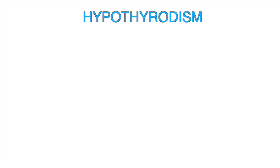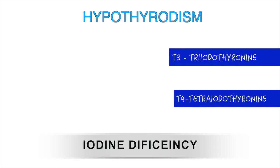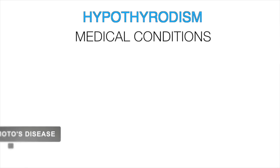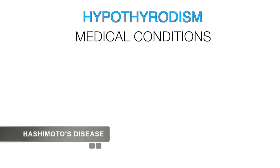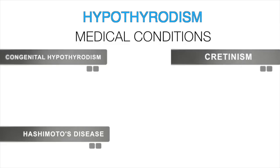Hypothyroidism is the less production of thyroid hormone. The main reason behind it is iodine deficiency, since iodine is a source for both T3 and T4 hormones. Iodine deficiency causes hypothyroidism, which in turn leads to several medical conditions including Hashimoto's disease — an autoimmune disorder causing gradual destruction of the thyroid gland due to inflammation. When thyroid deficiency is present at birth, it is called congenital hypothyroidism, which leads to cretinism — a condition of stunted physical and mental growth.